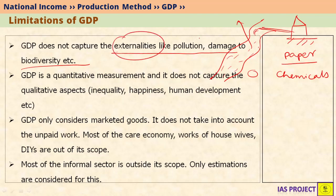These are called externalities. Externalities means the paper factory and the fishermen did not engage in any arrangement to exchange this kind of impact in the economy — the factory simply causes adverse effects on the fishermen. Such adverse effects, which are generally caused on the economy but can also affect other people and entities, are called externalities. Examples include pollution and damage to biodiversity.